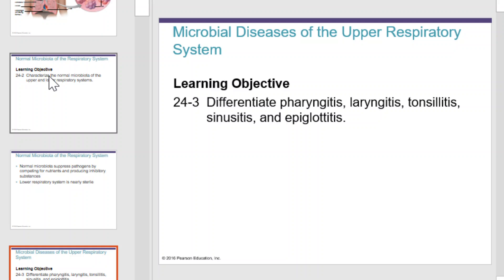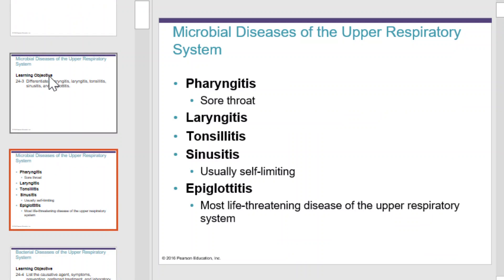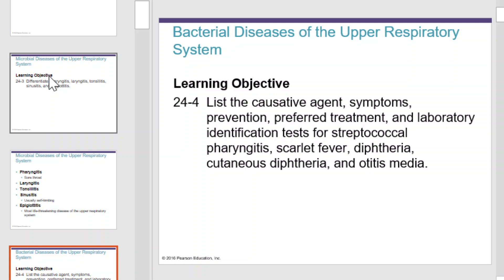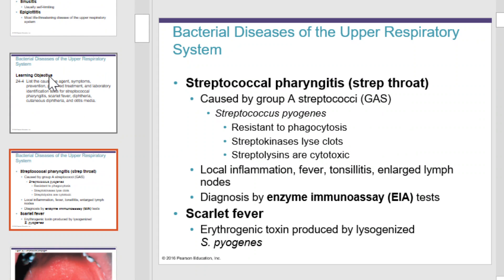Microbial diseases of the upper respiratory system: pharyngitis, laryngitis, tonsillitis, sinusitis, and epiglottitis are examples of diseases of the upper respiratory system. Diseases of the upper respiratory system, starting with streptococcal pharyngitis, include things like sore throat.